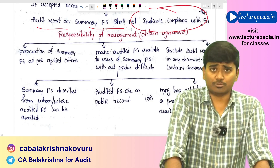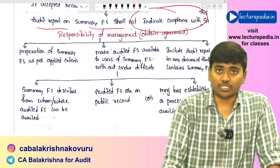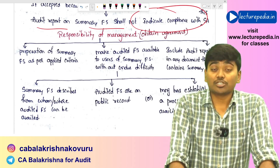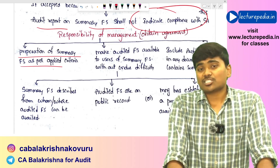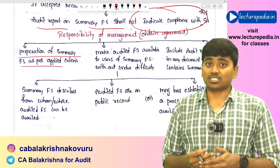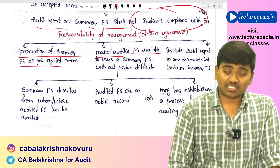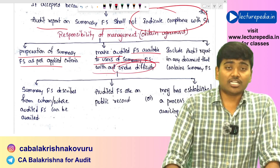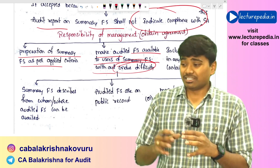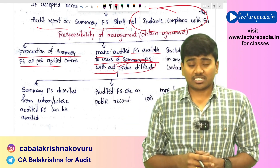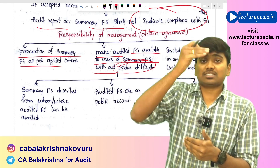After accepting the engagement, the auditor should obtain a written agreement from management regarding their responsibilities. Management is responsible for: preparing summary financial statements as per the applicable criteria, and making the audited complete set of financial statements available to users of the summary financial statements — so that users who read only the summary can still access complete information.